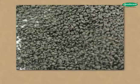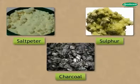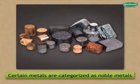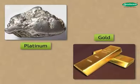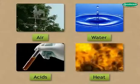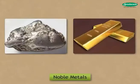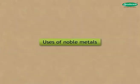Gunpowder is an explosive made of saltpeter, sulfur and charcoal. Certain metals are categorized as noble metals. Metals like platinum and gold are found in nature in the form of elements. They are not affected by air, water, acids, heat, etc. Hence they are called noble metals, and they do not ordinarily take part in chemical reactions.